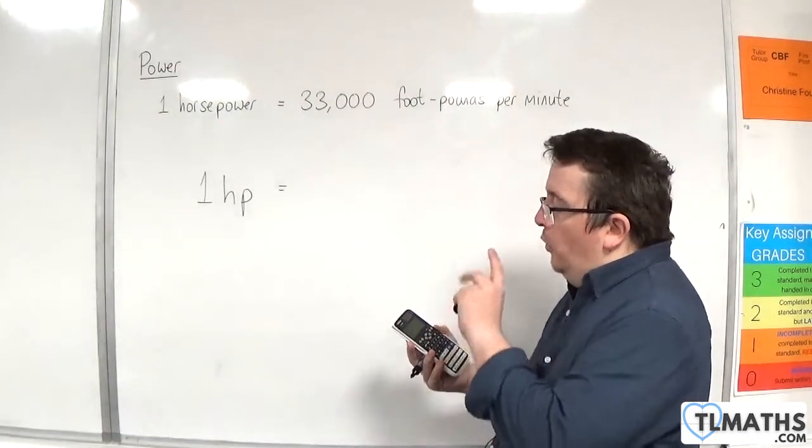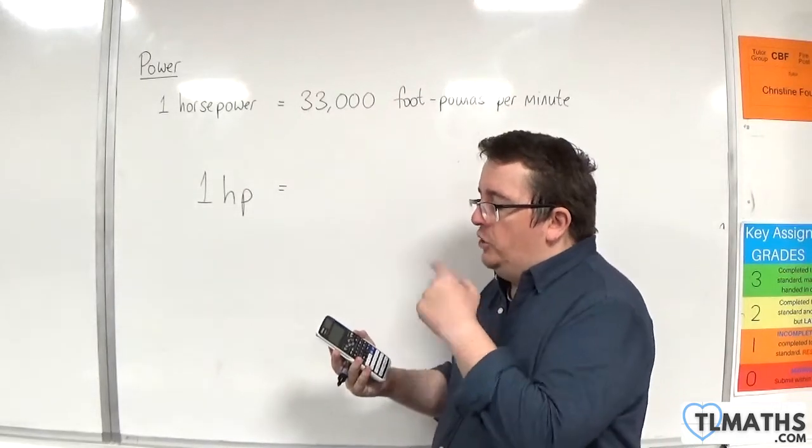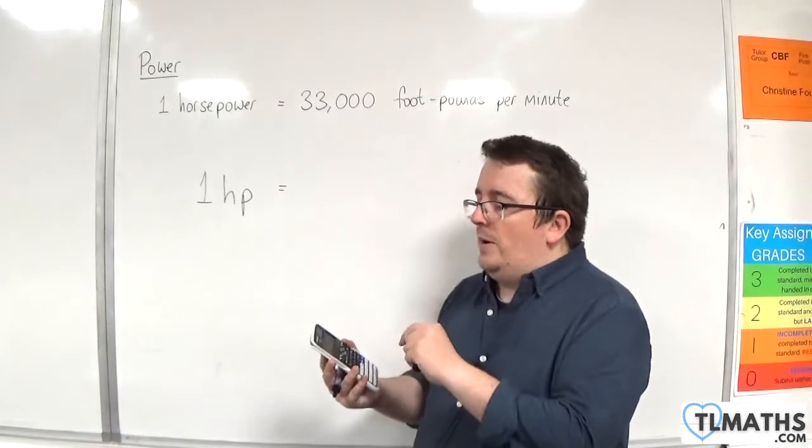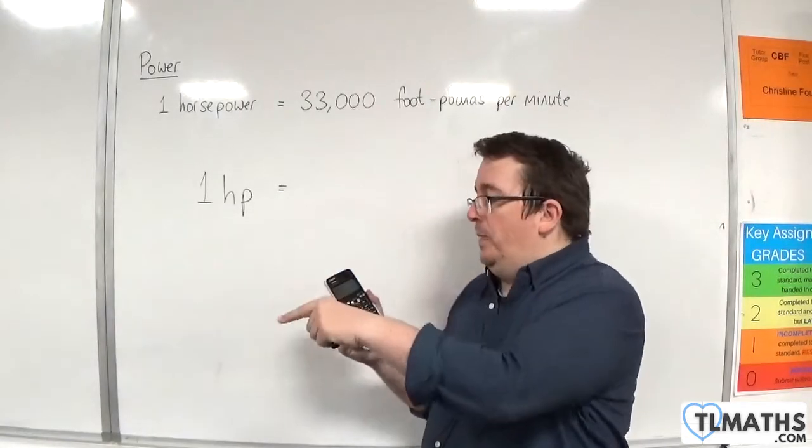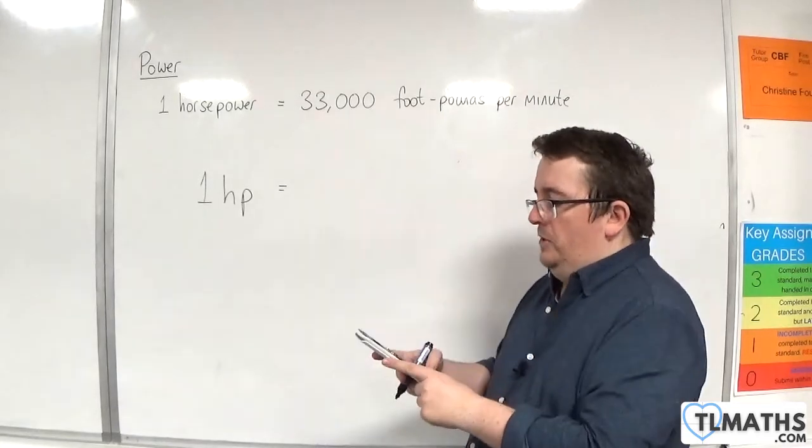Now there are two options here. There's horsepower to kilowatts or kilowatts to horsepower. So we're going to choose the first one, horsepower to kilowatts. And so you should now have a screen that says 1 HP, then a little arrow, then KW. Press equals.